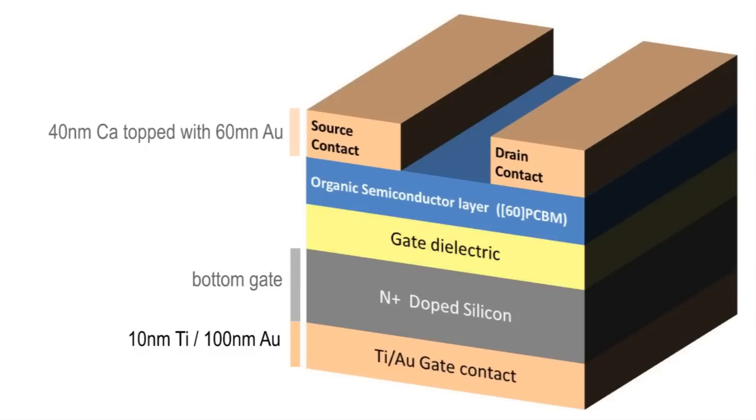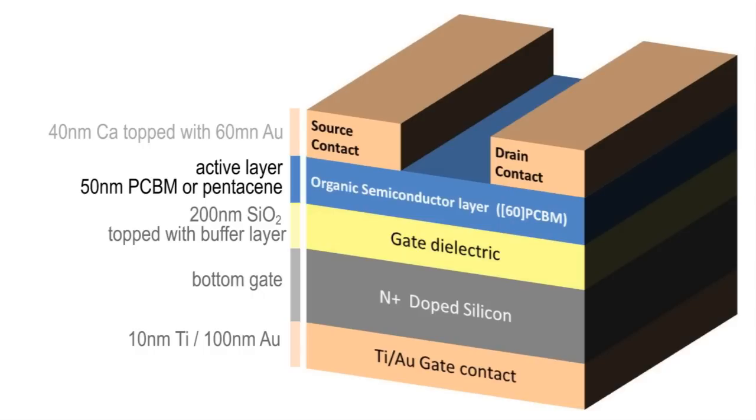In between you see a gate dielectric layer, which is essentially a silicon dioxide layer, preferably 200 nanometer thick. We passivate the silicon dioxide layer with a surface treatment or buffer layer, which is OTS, octadecyl trichlorosilane, or for N-channel transistors, we have various polymer layers like benzocyclobutene or polystyrene.